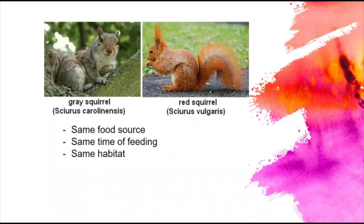An interesting example of niches is the gray squirrel and the red squirrel. You should notice that they belong to the same genus because they've got the same capitalized genus name, but they're different species. The gray squirrel and red squirrel have the same food source, the same time of feeding, and the same habitat — so they basically have the same niche. Whenever two organisms have the same niche, that becomes a problem because the environment can't really support both.